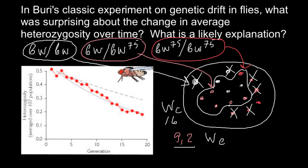Eventually, at the end only one color would prevail — either red or white — the heterozygotes would be lost, and one of the colors would also eventually disappear. The smaller the community, the faster this process goes. This experiment confirms this prediction and is very important for conservation biology and breeding programs — we must take into account not the population census size but the effective population size.